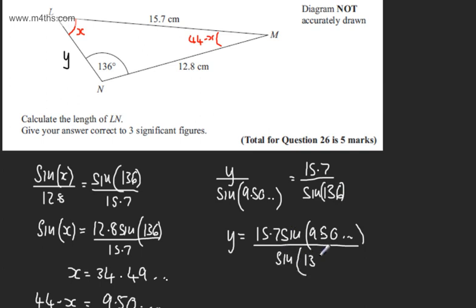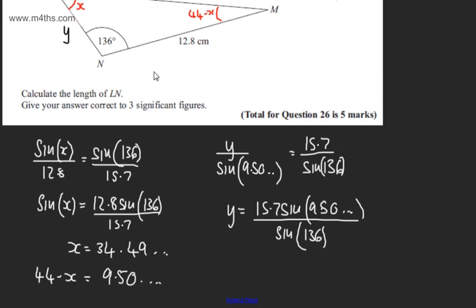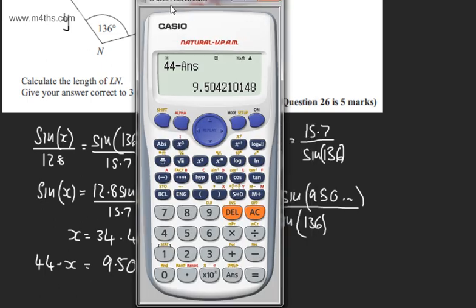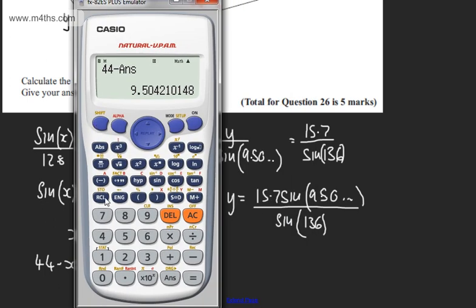So I'm simply using the sine rule twice. Lots of different approaches—you could use the cosine rule if you wanted. I'm just using this, storing it in the calculator in case I make an error. I'll have 15.7 sine of the answer, or I can put shift store A or recall A, then divide by sine of 136 degrees.